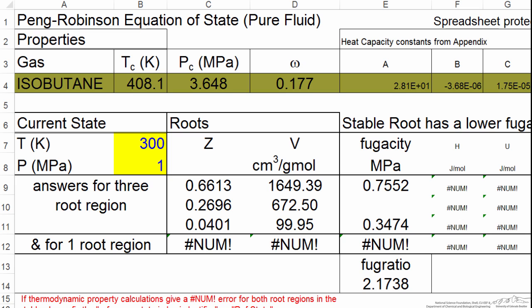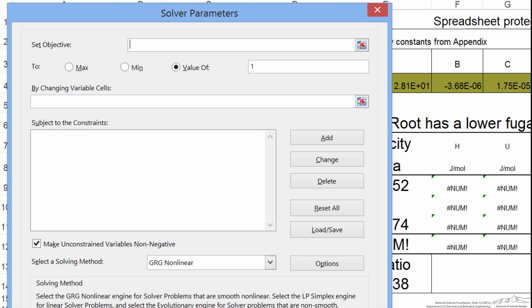Now what this spreadsheet does, it calculates the fugacity ratio. And this fugacity ratio then is what we'll use with Excel Solver. We'll set this ratio equal to 1 by adjusting the pressure. So I've opened Solver.